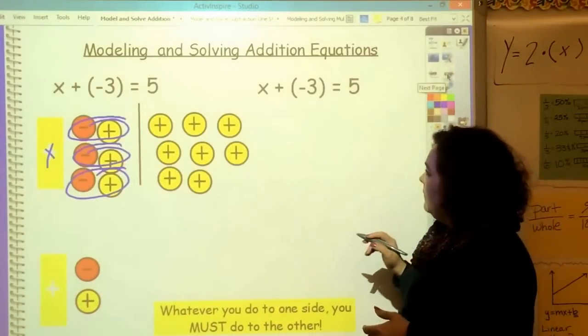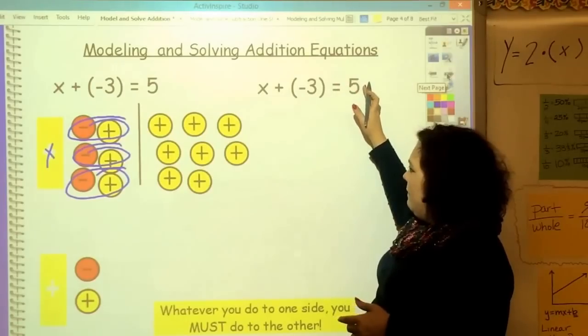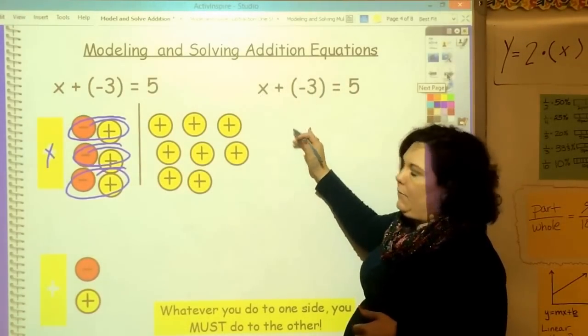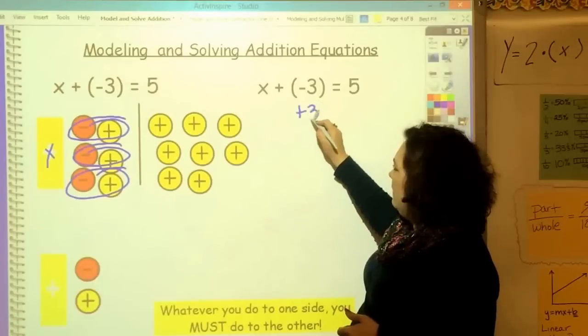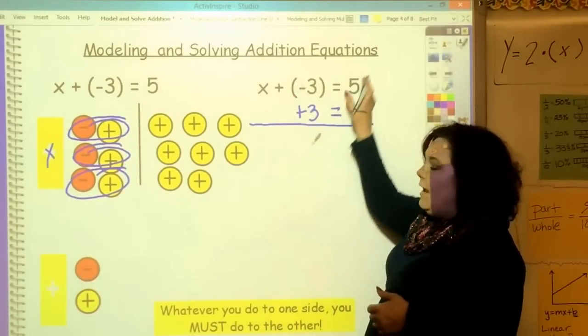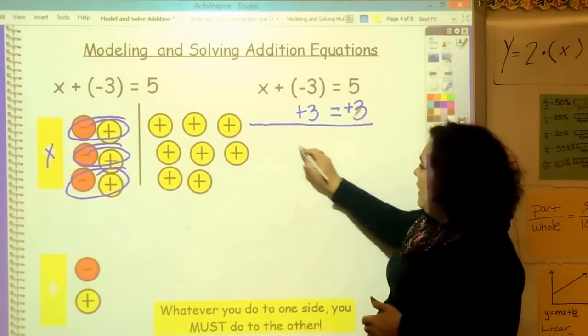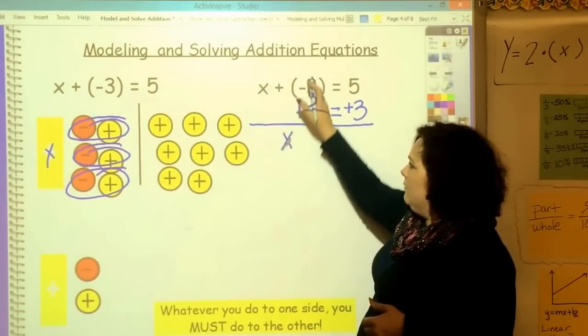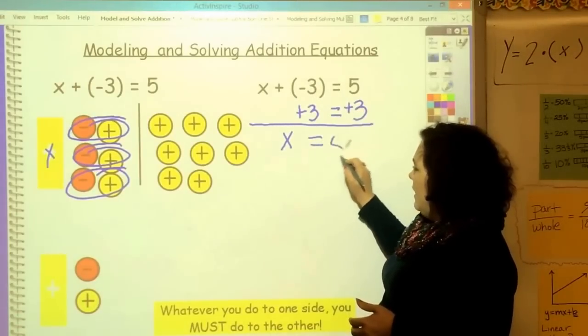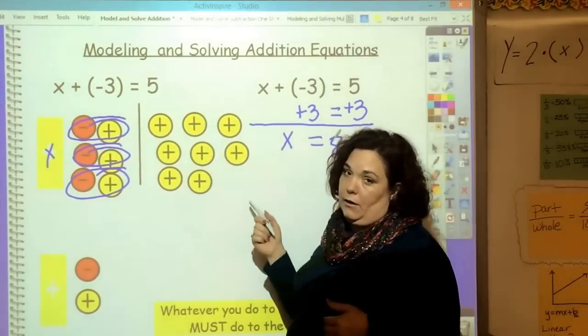Let's look at this one. I've got x plus negative 3 equals 5. I want to get x by itself. What's the opposite of negative 3? It's positive 3. Whatever I do to this side, I have to do to this side. So, plus 3 over here. And so, x comes down. That's 0. So, I don't have to write anything. Equals 8. x equals 8. And isn't that what I showed over here? It is.